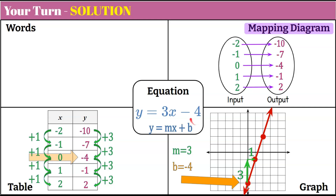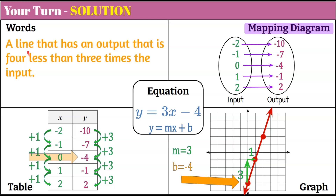To write this in words, we're going to say it's a line that has an output that is 4 less than 3 times the input. And there you have it — 5 ways to represent this function.